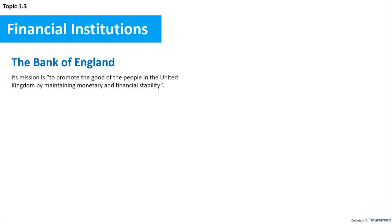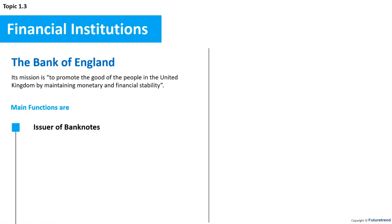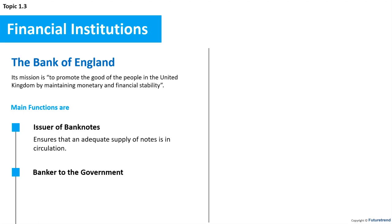Its mission is to promote the good of the people of the United Kingdom by maintaining monetary and financial stability. In doing this it performs several important roles. As issuer of banknotes, it ensures an adequate supply of notes is in circulation. As banker to the government, the Bank of England holds the government's own account and provides financial cover of any deficit by making automatic loans to the government, or if a surplus exists, the bank may lend it out as part of general debt management.